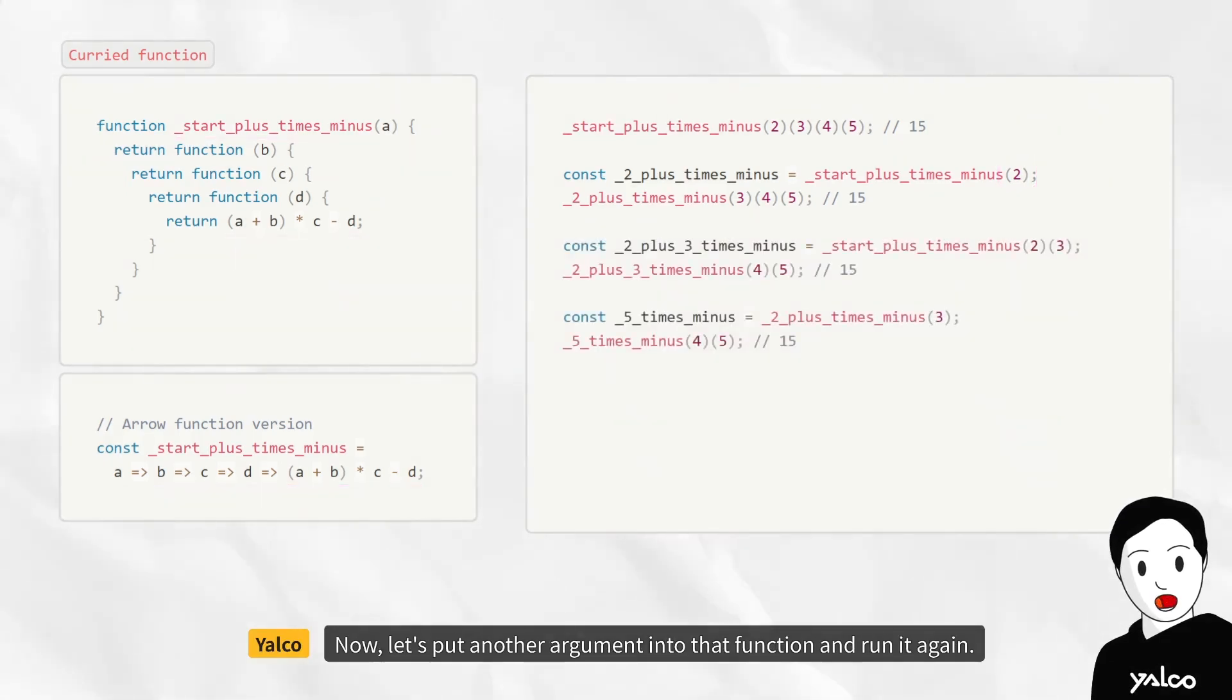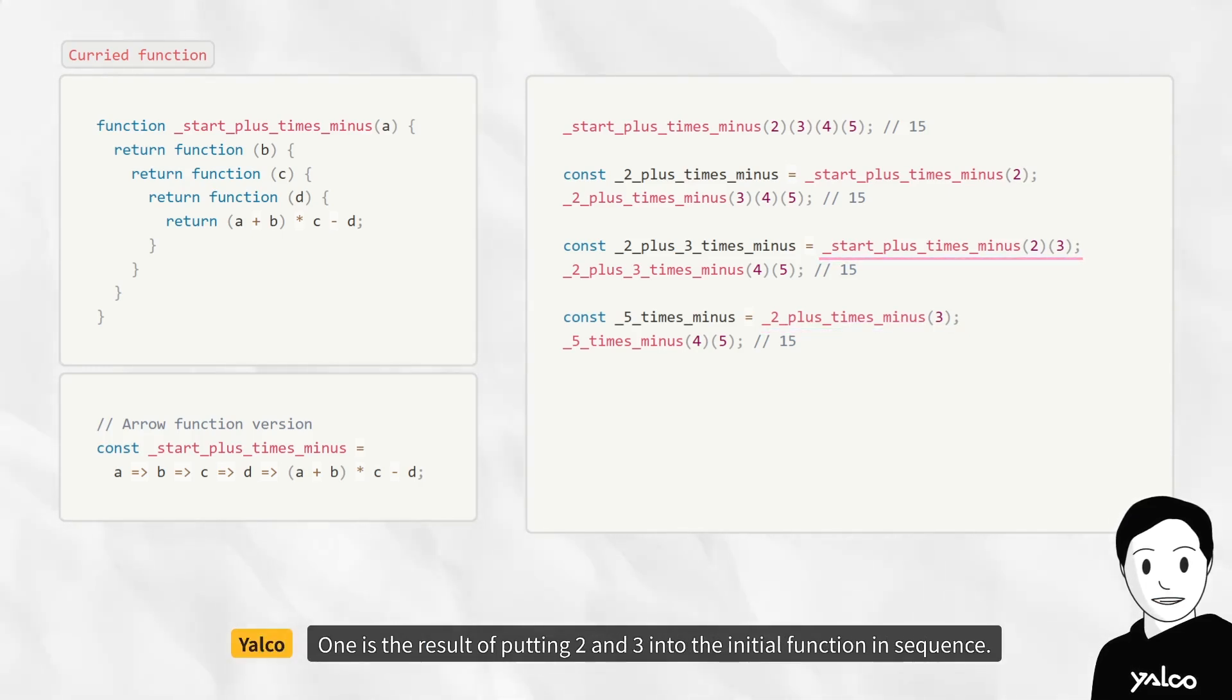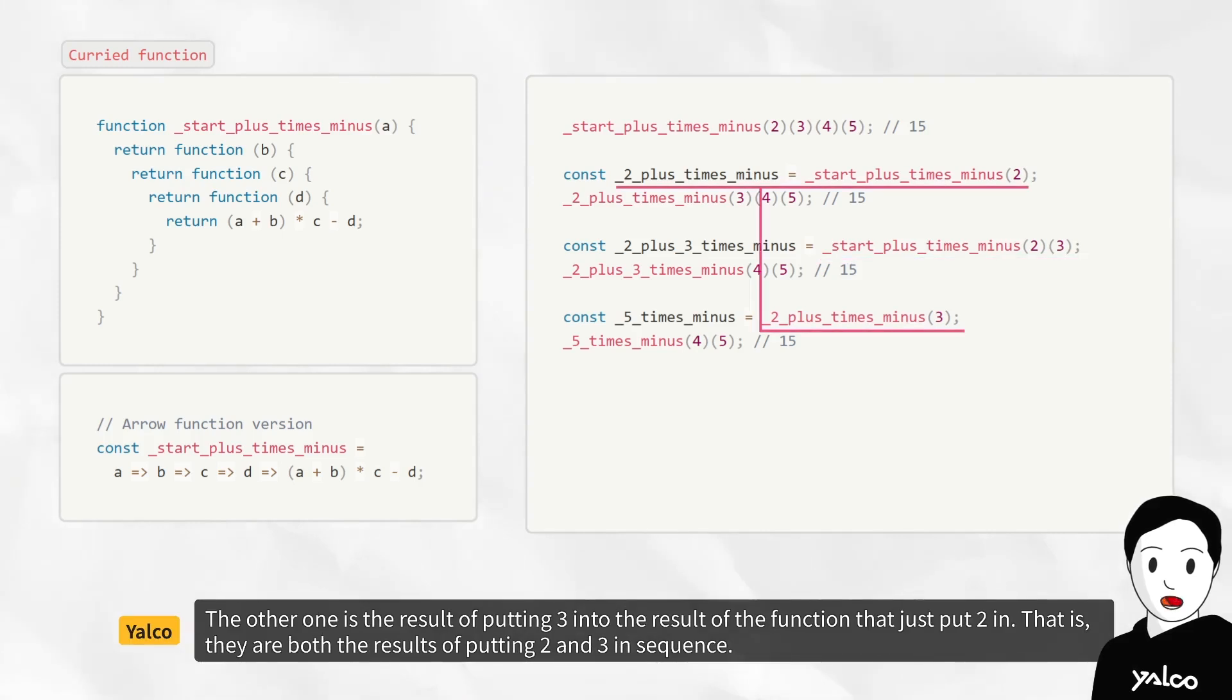Now, let's put another argument into that function and run it again. These two are codes doing the same thing. One is the result of putting 2 and 3 into the initial function in sequence. The other one is the result of putting 3 into the result of the function that just put 2 in. That is, they are both the results of putting 2 and 3 in sequence.